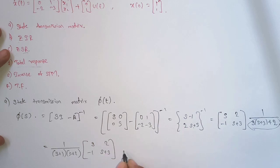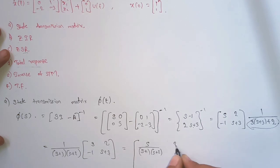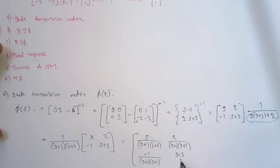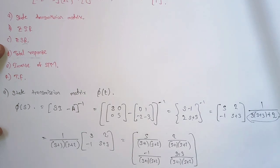Multiplying each element of the adjugate matrix by 1/(s+1)(s+2), we get the four elements of φ(s): s/(s+1)(s+2), 2/(s+1)(s+2), −1/(s+1)(s+2), and (s+3)/(s+1)(s+2). We then apply partial fractions to each element.